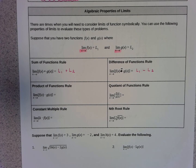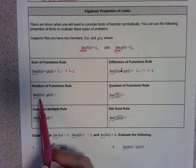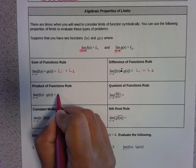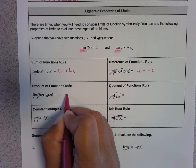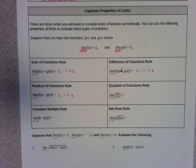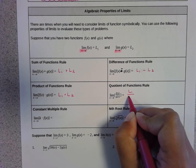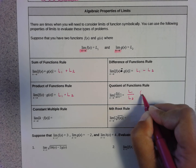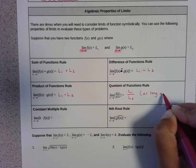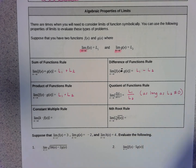The product of functions rule says that if you want to find the limit as x approaches a of f(x) times g(x), you can just multiply the limits — L1 times L2. And the quotient rule says if you want to divide the functions, you can just divide the limits, L1 divided by L2, as long as L2 is not zero, because you can't divide by zero.